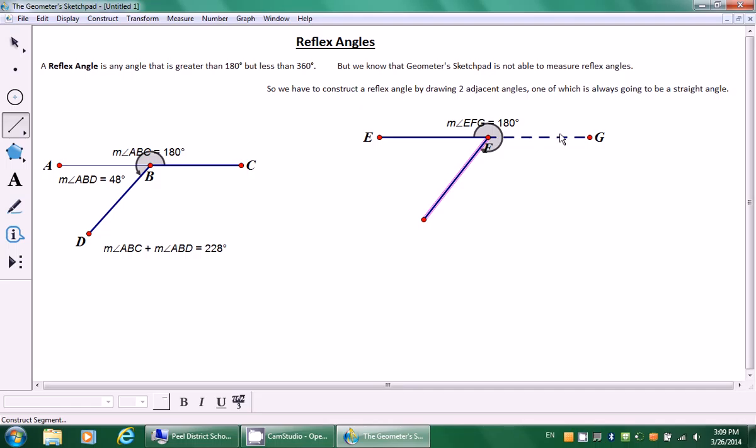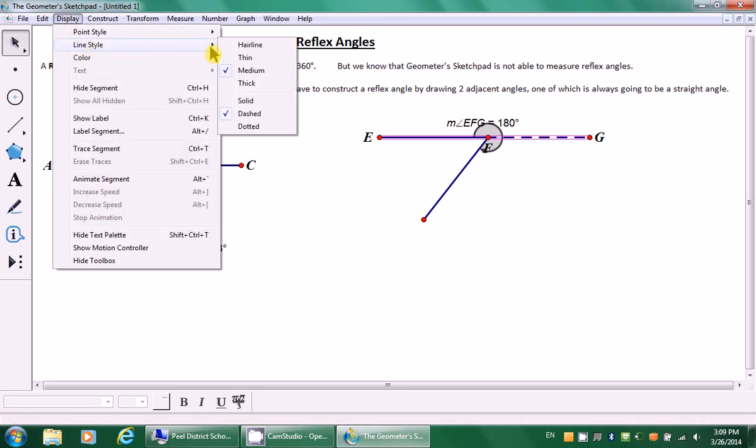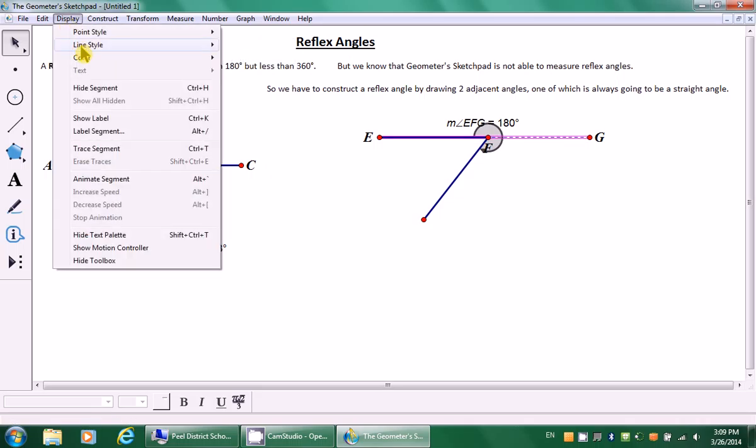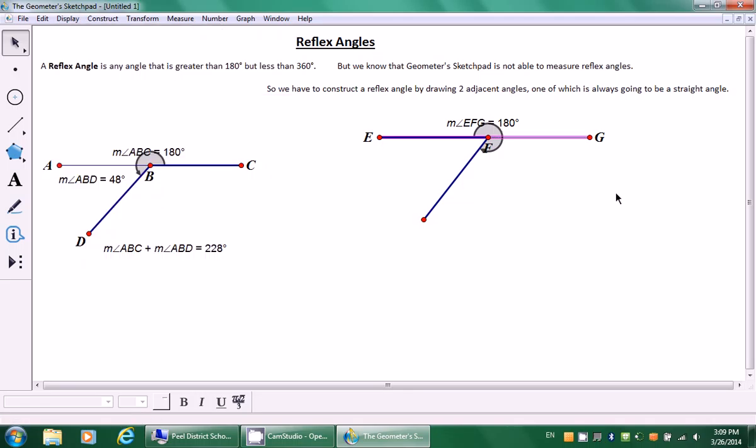But this time, I want to measure this angle right here. So that means I need to trace over this line and this line. Because remember, this line is not that important in the reflex angle. Yes, it's part of the reflex angle.